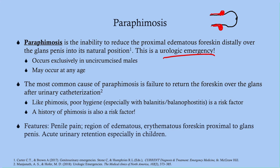Again, this only occurs in uncircumcised males and can occur at any age. The most common cause of paraphimosis — and this is really important for nurses — is not returning the foreskin over the glans after catheterization. When placing a Foley catheter, you retract the foreskin to clean and insert the catheter, but you must replace the foreskin afterward. Poor hygiene and a history of phimosis are also risk factors.